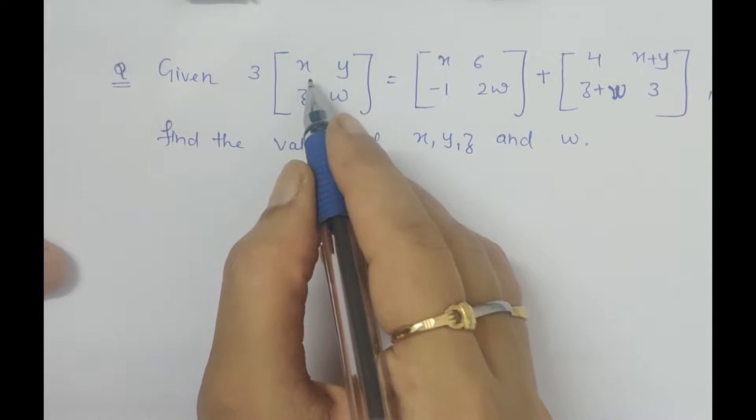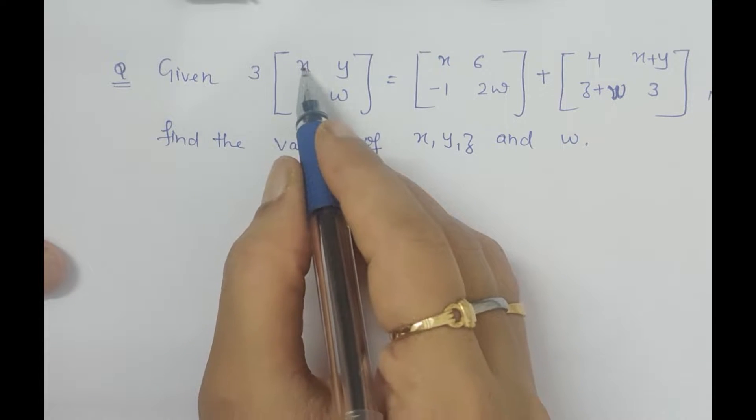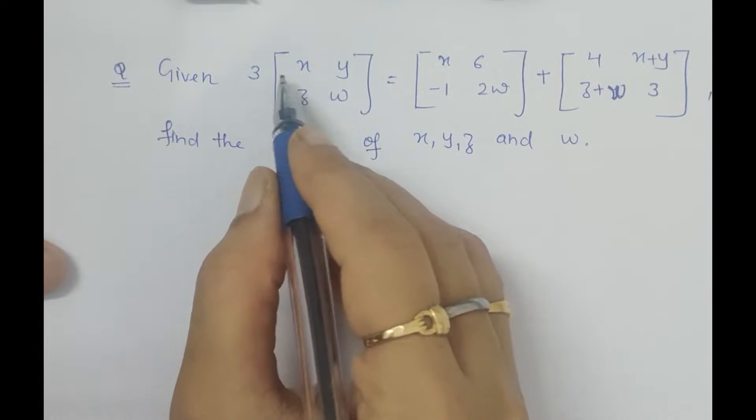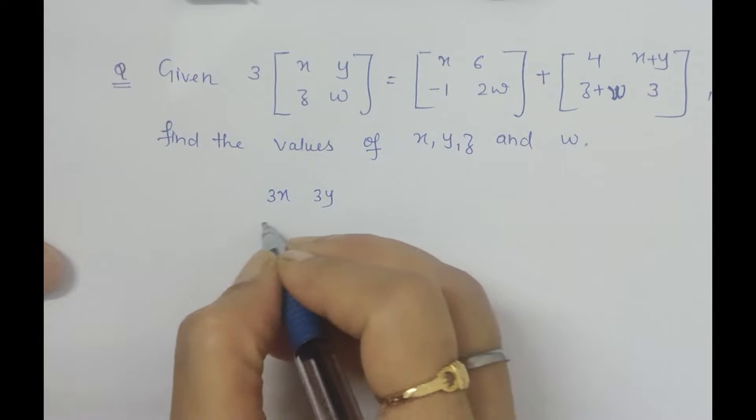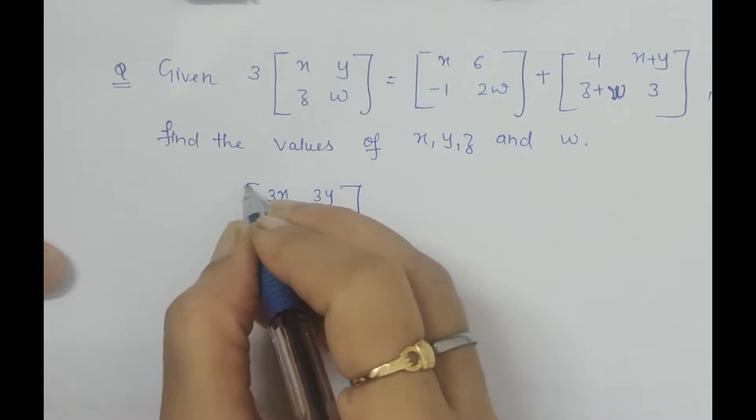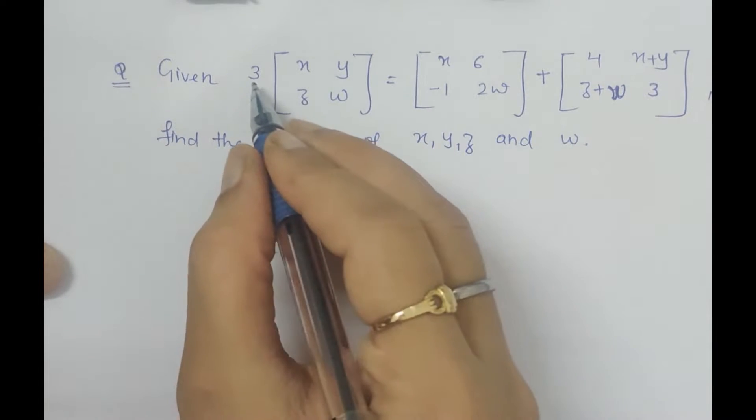If 3 is getting multiplied with any matrix, it means 3 will get multiplied with each element of the matrix. In the next step, I'll get 3x, 3y, 3z, 3w - this will be the result when we multiply 3 with the matrix.